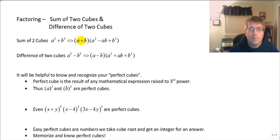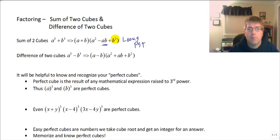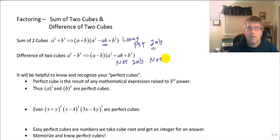Sum of two cubes: signs go plus, minus, plus. Difference of two cubes: signs go minus, plus, plus. From there the pattern is the same — use the cube root of a cubed to get a, cube root of b cubed to get b. Square a to get a squared, square b to get b squared, and a times b gives the middle term. This does look like a perfect square trinomial with the pattern a squared minus ab plus b squared, but remember the PST requires two times a times b as the linear term, and we don't have that — so it is not a perfect square trinomial.